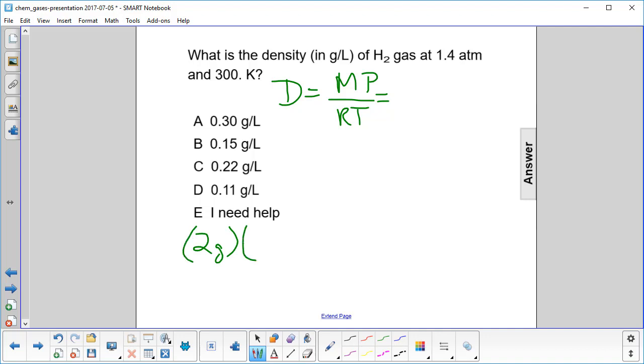The pressure is 1.4 atm, and we're supposed to put it in that unit, so we're good. 0.08206, and that's in liter atmosphere moles per K. Then we multiply that by the temperature, which is 300 K.